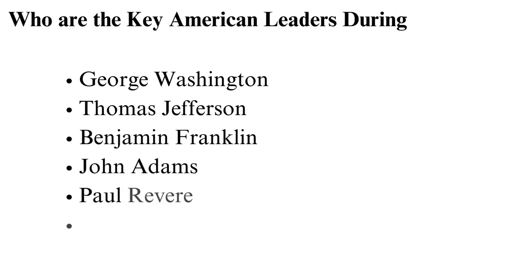Who are the key American leaders during the American Revolution? George Washington became the first President of the United States after the Revolutionary War, and also commander-in-chief of the American forces during the war. Thomas Jefferson was the primary author of the Declaration of Independence. Benjamin Franklin was a writer, scientist, and statesman who secured French support for the American Revolution, serving as Second Continental Congress spokesman and a Declaration of Independence Committee member.